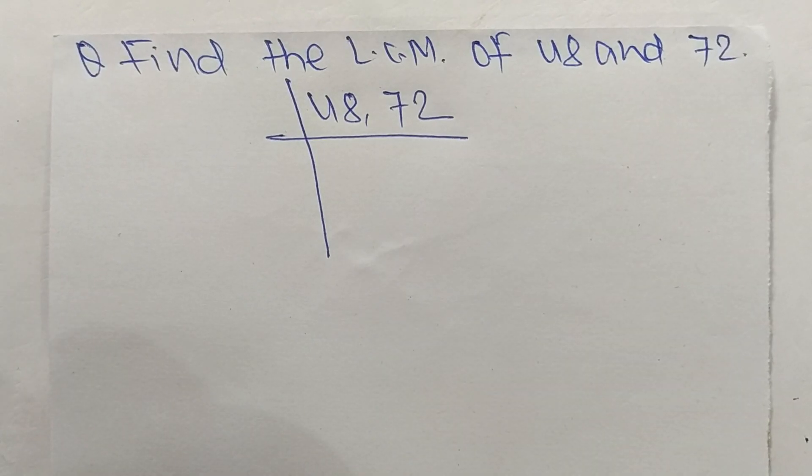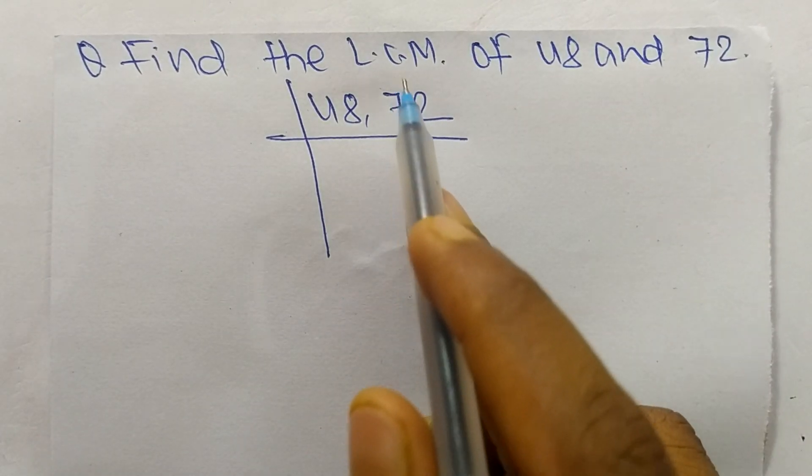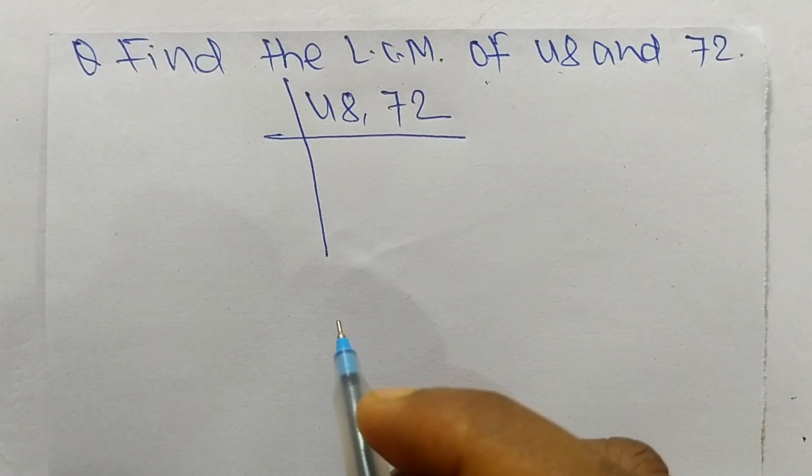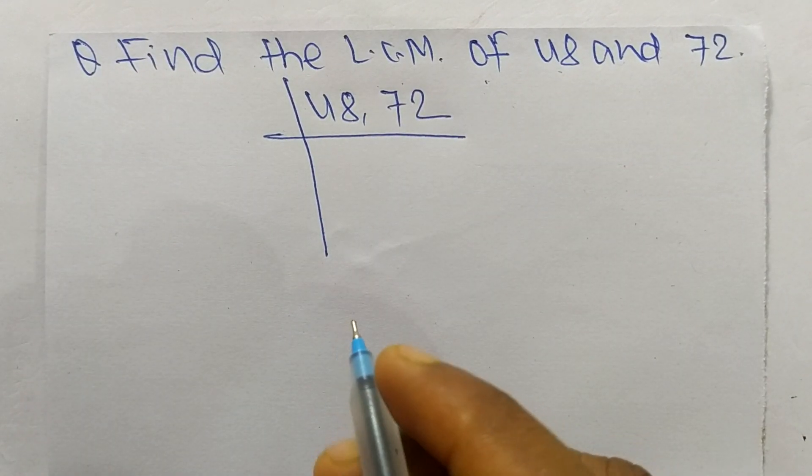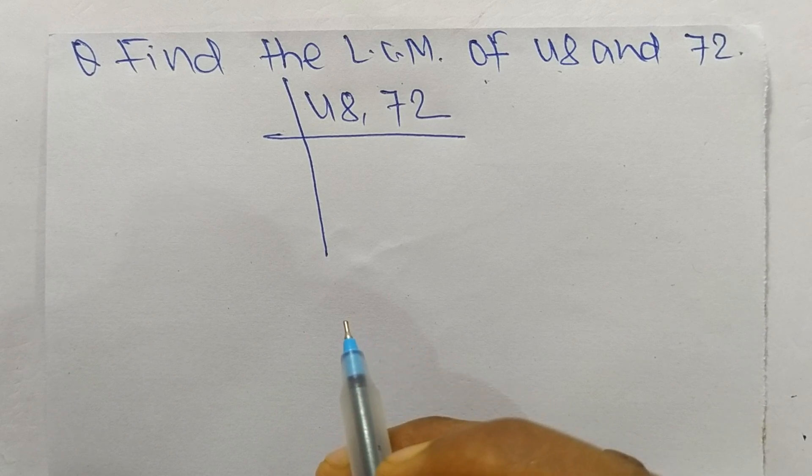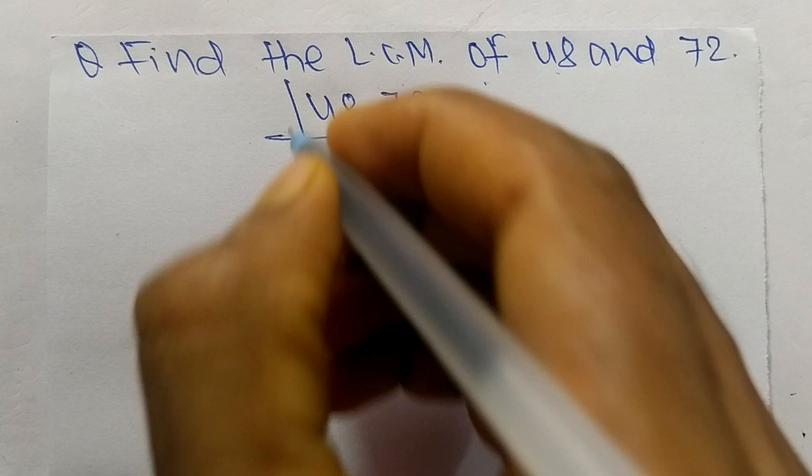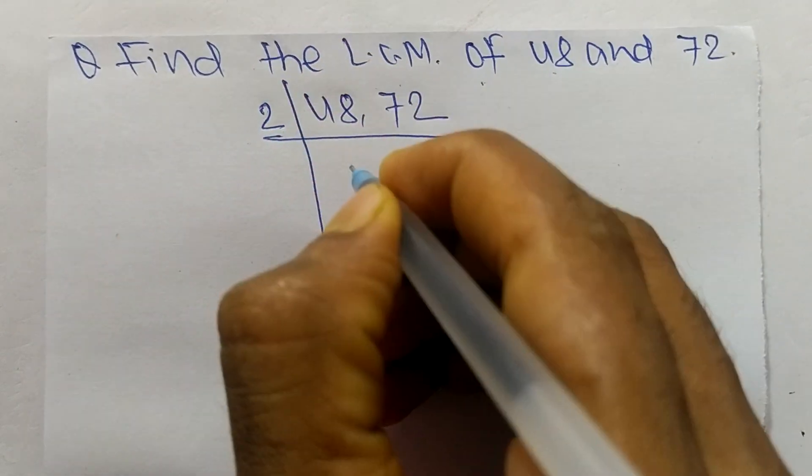So today in this video we shall learn to find the LCM of 48 and 72. To find LCM, first we choose the lowest number that can exactly divide 48 and 72. So the number is 2.